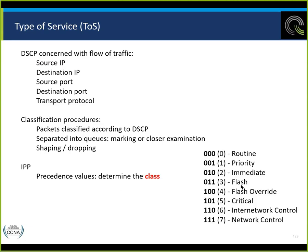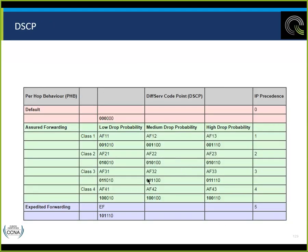The IP precedence values are: routine, priority, immediate, flash, flash override, critical, internet control, and network control. If you ever wrote a military message, these priorities may sound familiar — routine, priority, immediate, flash — because much of the early development of this was by the DOD, DARPA, the Defense Advanced Research Projects Agency. The IP precedence values determine the class and priority.